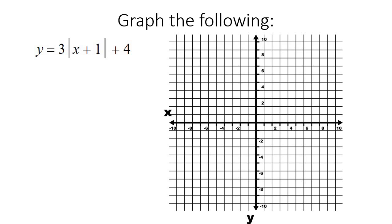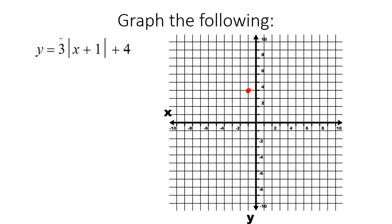Here's another example. Step 1: find the vertex. That x plus 1 part means 1 to the left. Then 4 up: 1, 2, 3, 4. So the vertex is at negative 1 and 4. Now look at the slope: 3 over 1. Rise is 3, run is 1. So we go 1, 2, 3 up, then 1 to the right, and also 1 to the left because it's an absolute value. Now connect the dots — like that and like that. That's how we do it.